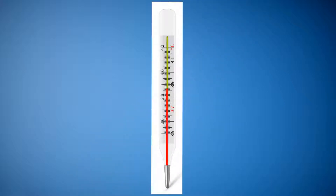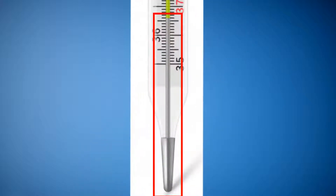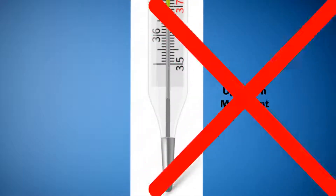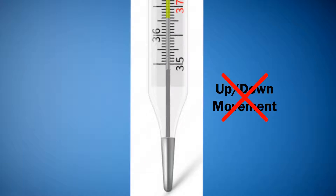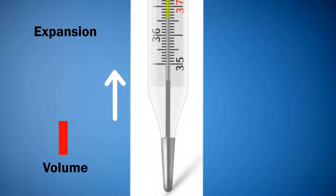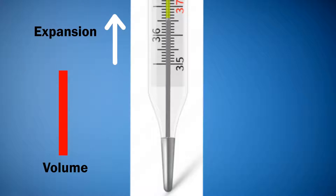Thermometer has a tube-like structure which is filled with a liquid. This liquid moves up when temperature rises and goes down when temperature falls. Actually, the liquid doesn't move up or down, but it expands when heated and contracts when cooled down. Expansion leads to an increase in volume, and thus it seems like the liquid is moving up, but in fact the liquid is occupying more volume.